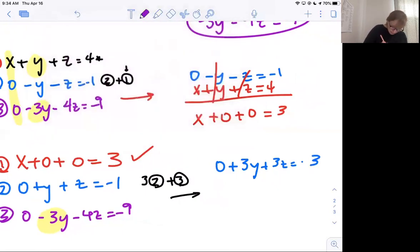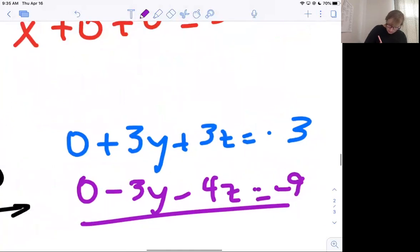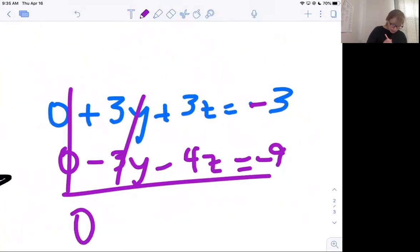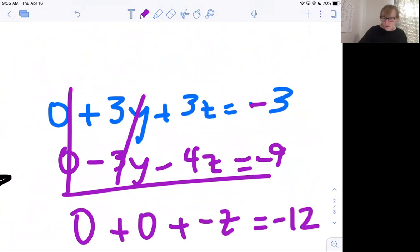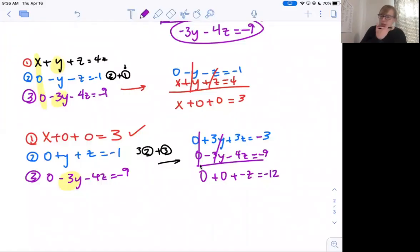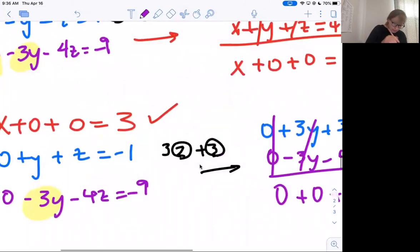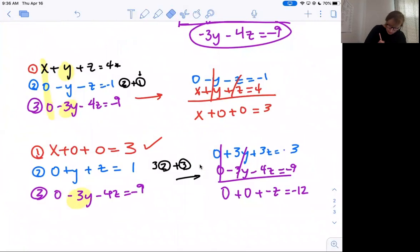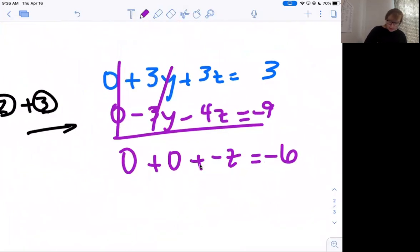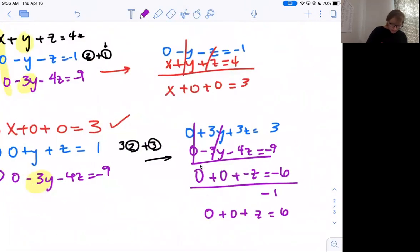Row 2 will be 0 plus 3Y plus 3Z equals negative 3, and row 3 stays the same because I'm adding it to that: 1 minus 3Y minus 4Z equals negative 9. 0 stays the same. Now I've got 0Y, plus negative 1Z equals negative 12. I did realize I made a mistake - this needs to be positive 1, and this becomes positive 3. So this should become negative 6. Before I rewrite it, I've got negative Z and negative 6. Let's divide everything by negative 1 and do 0 plus 0 plus Z equals 6. That makes my last row what I want it to be.